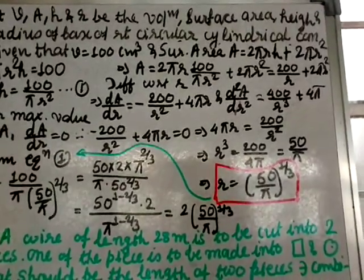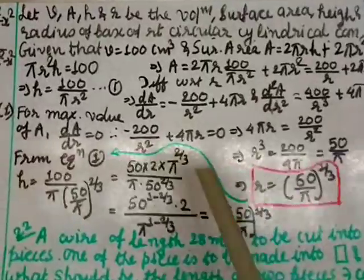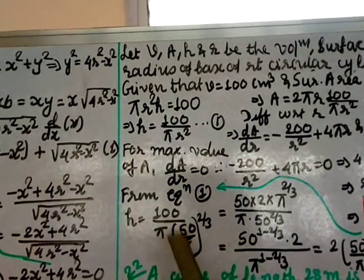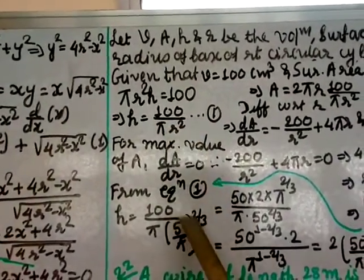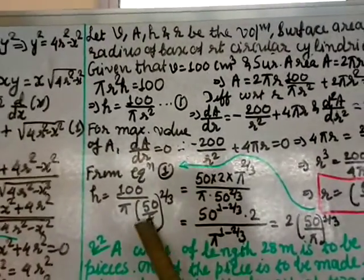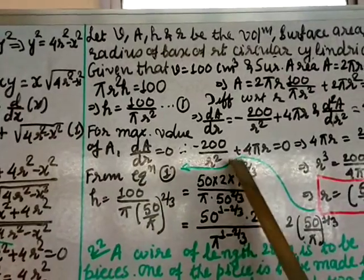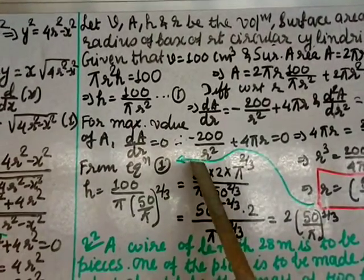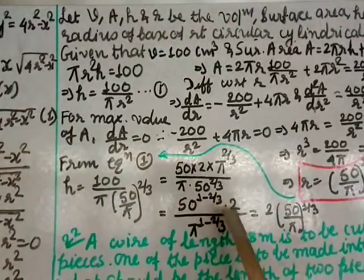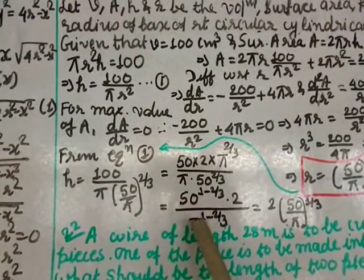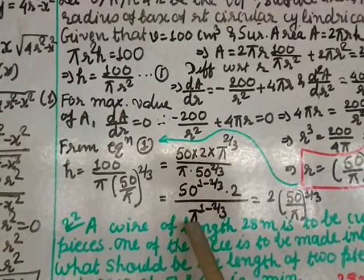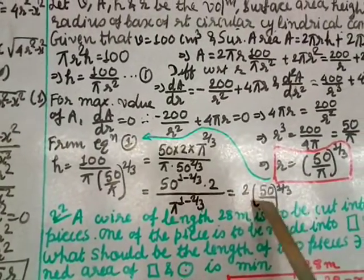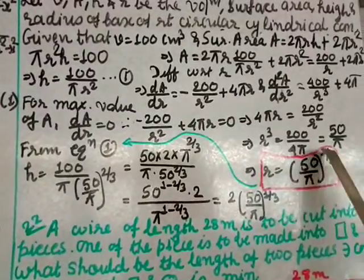Now finding height from equation 1: h = 100/(π times r squared) = 100 divided by π times (50/π) to the power 2/3. Simplifying: h = 2 times (50/π) to the power 1/3. So radius r = (50/π)^(1/3) and height h = 2(50/π)^(1/3). These are the dimensions of the can with minimum surface area.